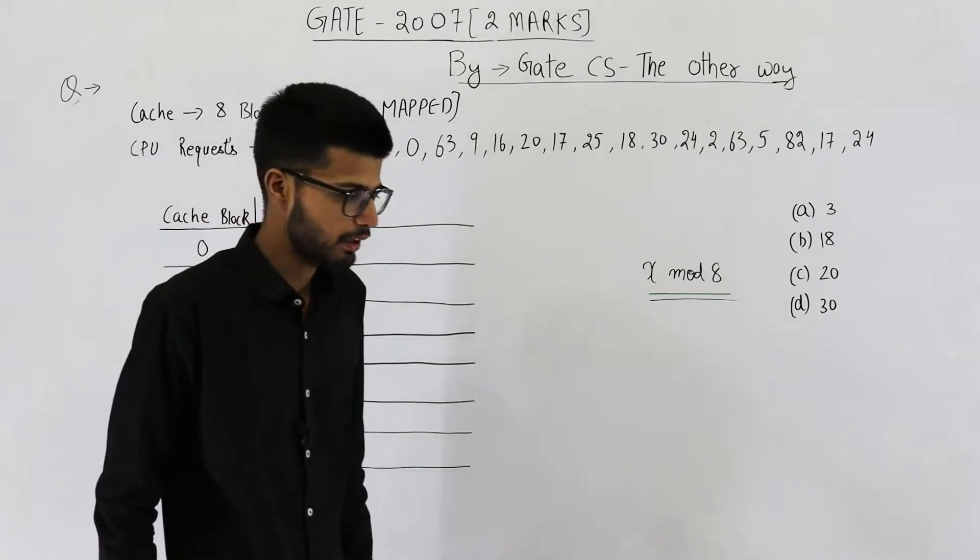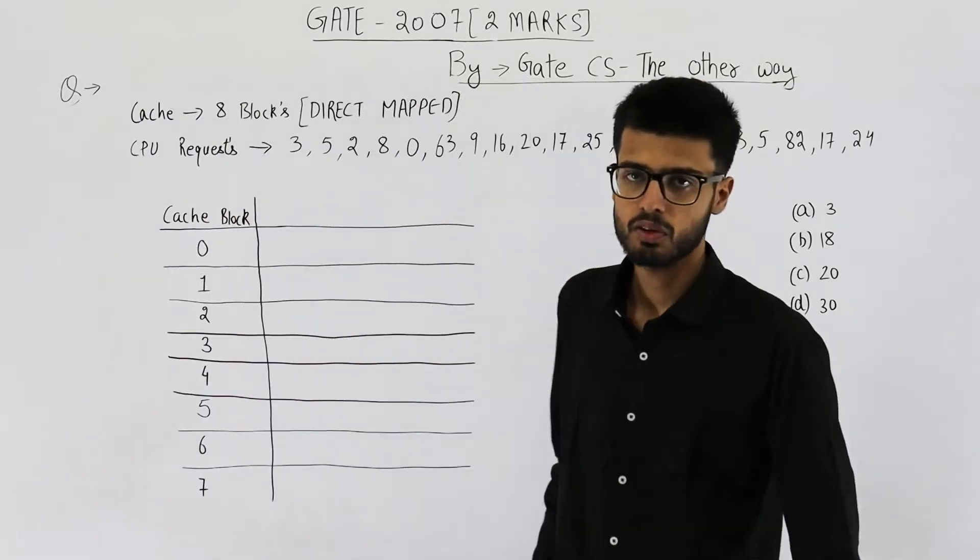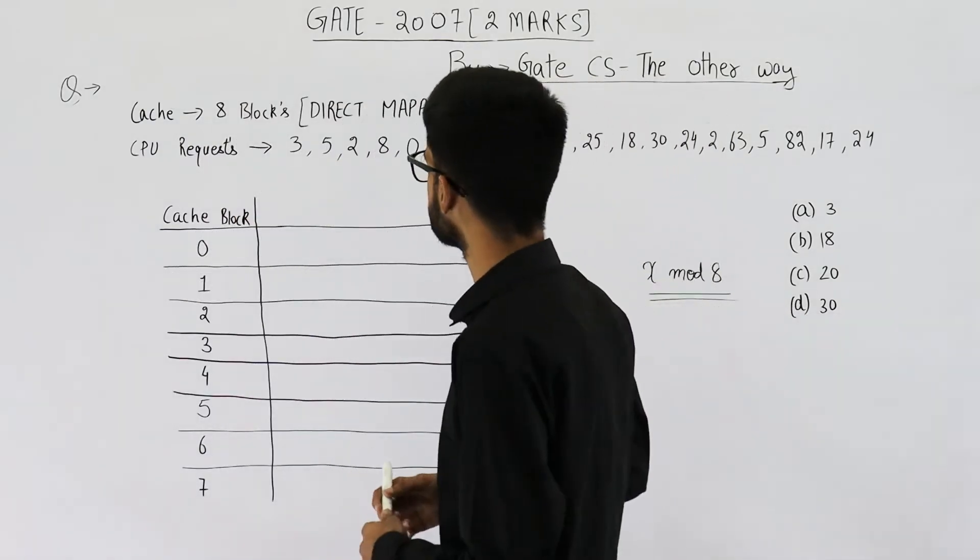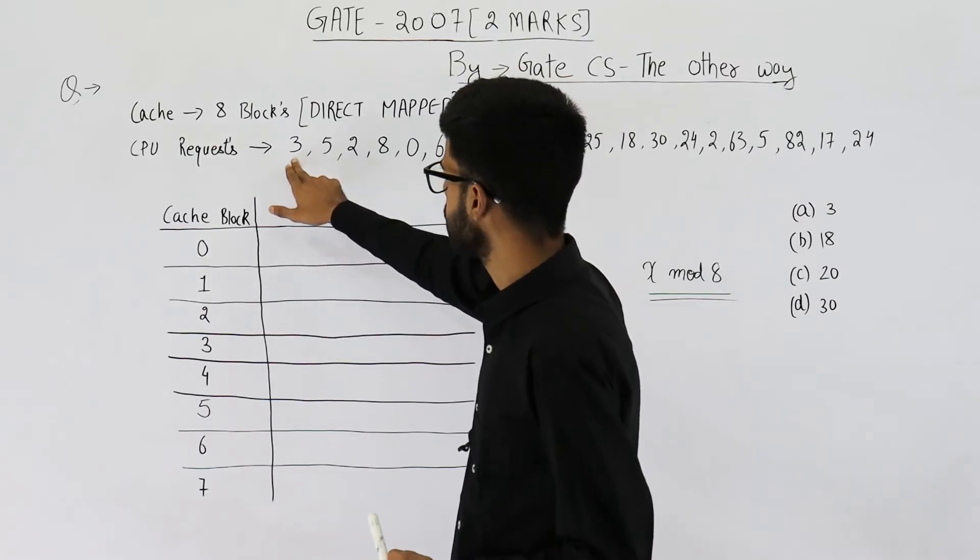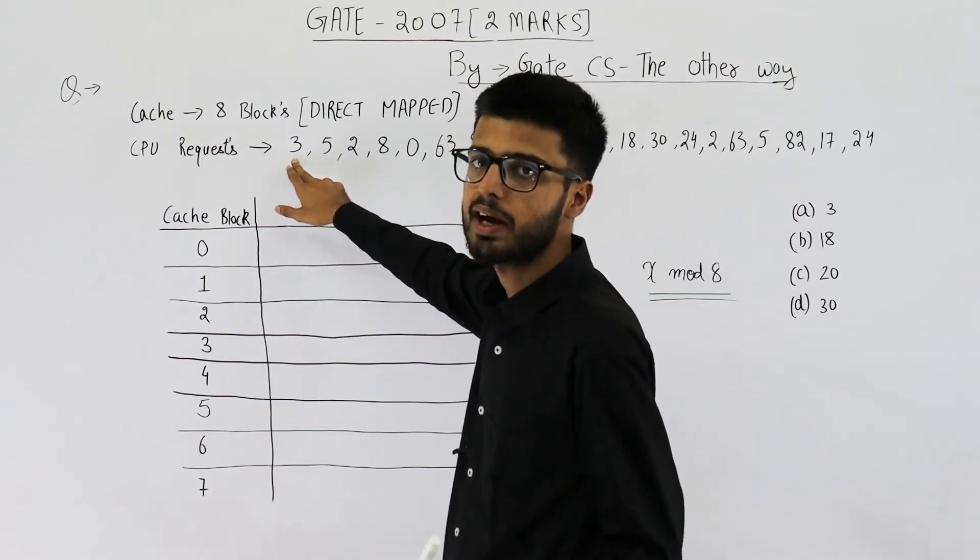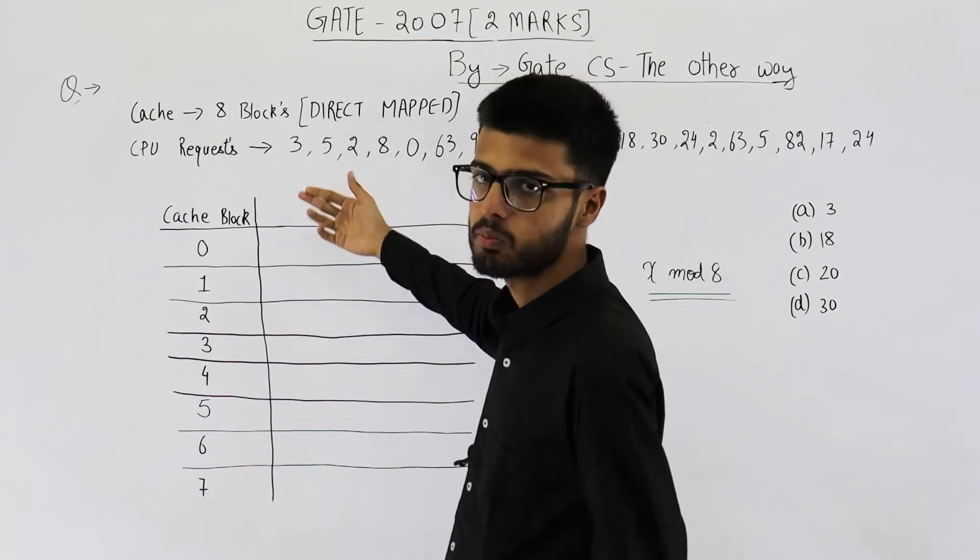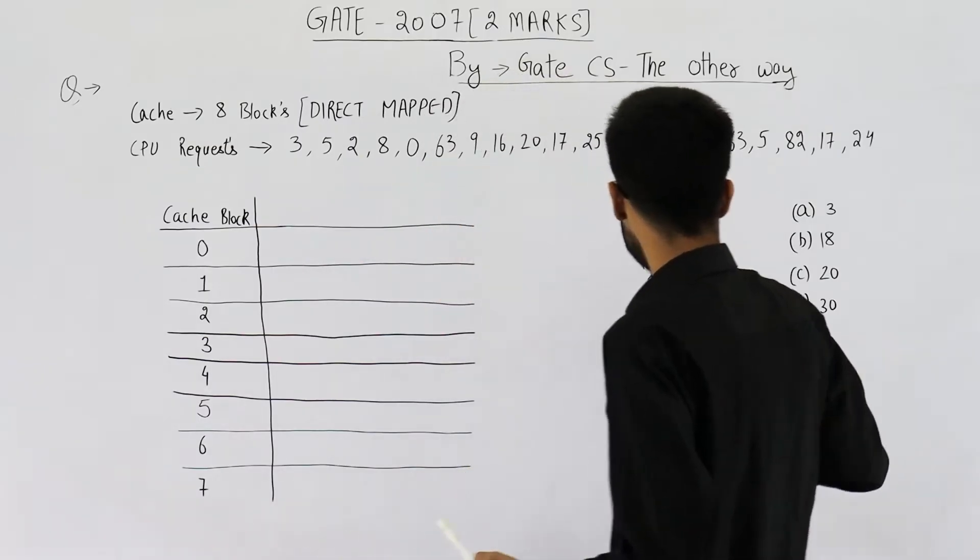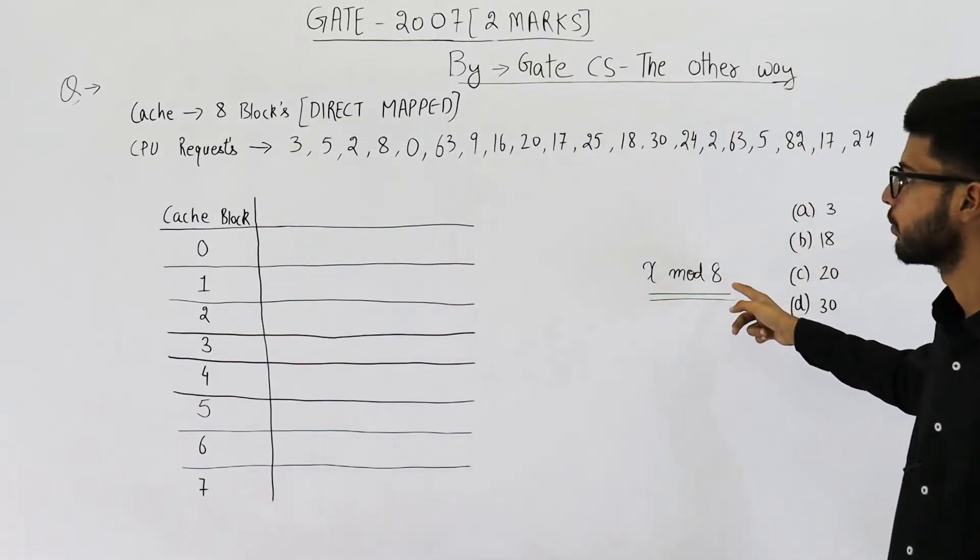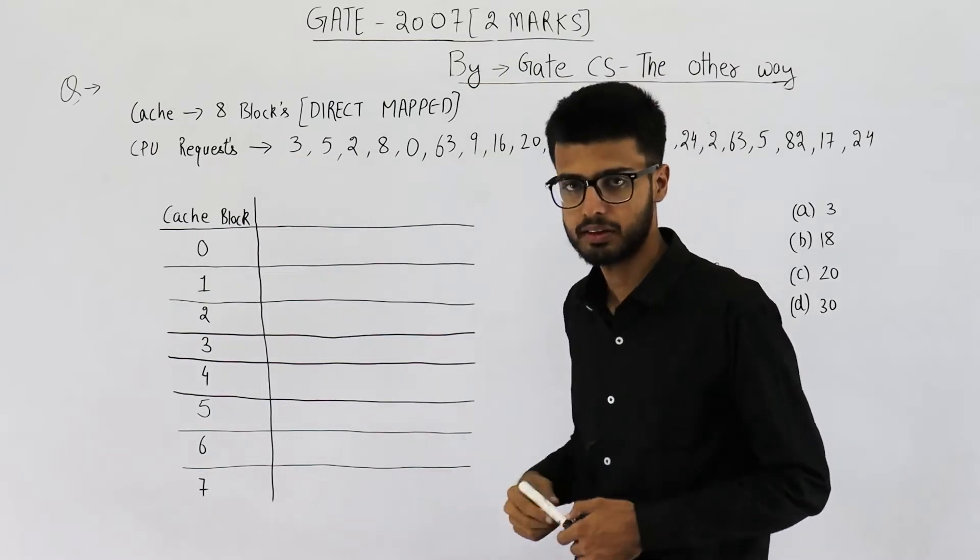It's a direct mapped cache. So in case of direct mapped cache, you very well know that any block number will get mapped to x mod the number of blocks. That is x mod 8 because here we have 8 blocks in cache.